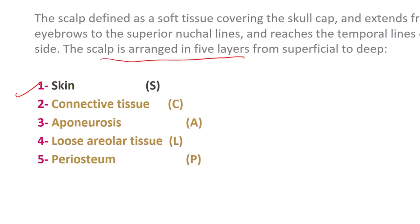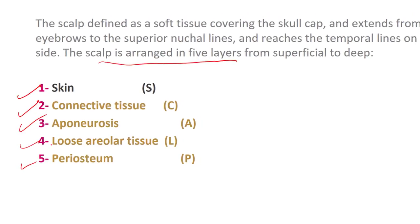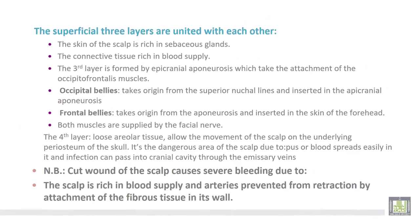The five layers are: number one, skin; number two, connective tissue; number three, aponeurosis. The fourth layer is formed by loose irregular tissue. The fifth and last layer is formed by periosteum, which covers the skull.